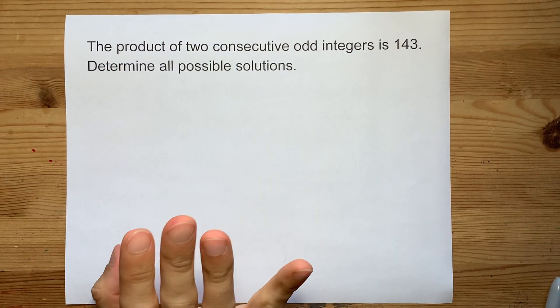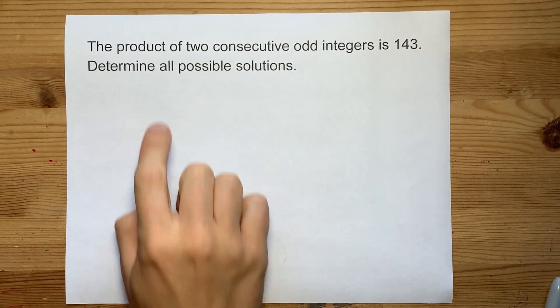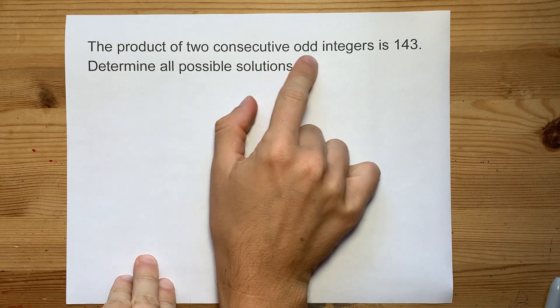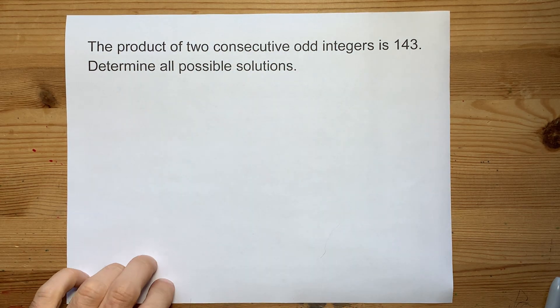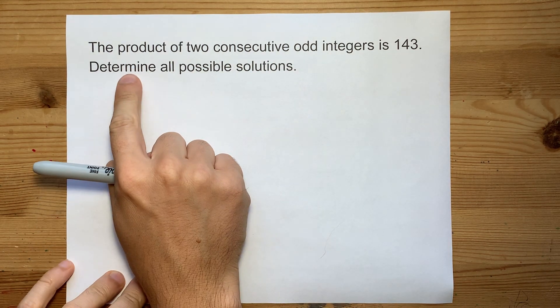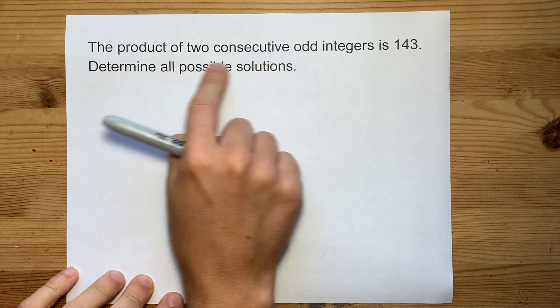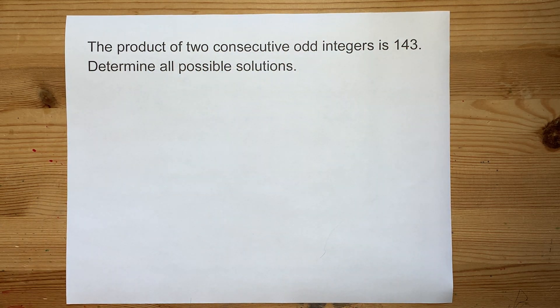It is a classic quadratic word problem. The product of two consecutive odd integers is 143. Determine all of the possible combinations of numbers that fit the bill.